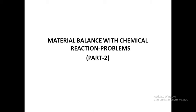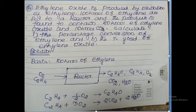Hello students. We are going to discuss material balance with chemical reaction problems, continuation. Fourth problem: ethylene oxide is produced by oxidation of ethylene. 100 kilomoles of ethylene are fed to a reactor. The product contains 80 kilomoles of ethylene oxide and 10 kilomoles of carbon dioxide. The objective of this problem is to find the percentage conversion and percentage yield of ethylene and ethylene oxide.